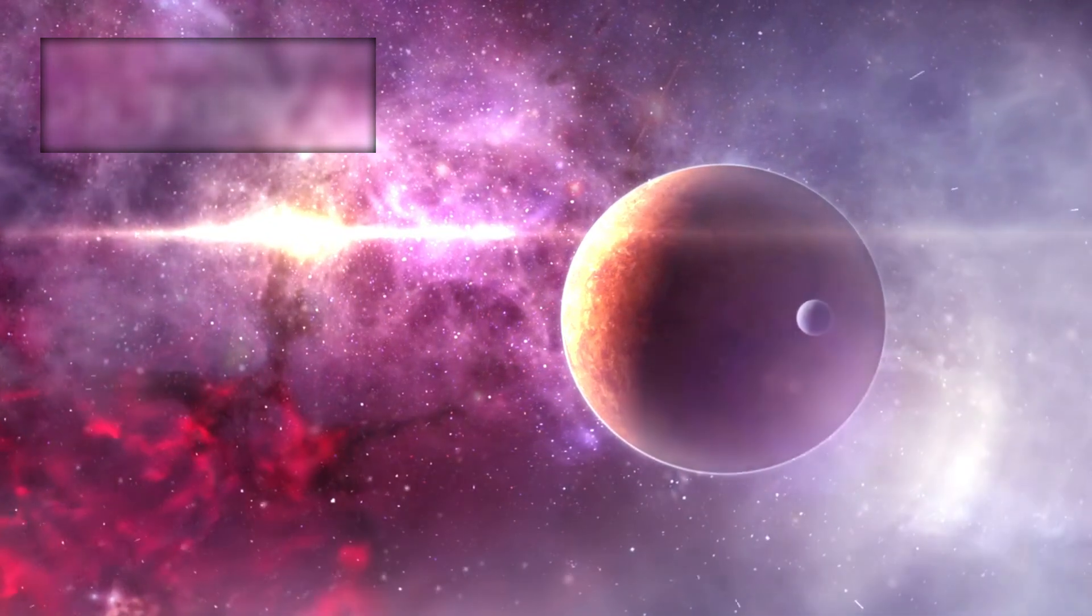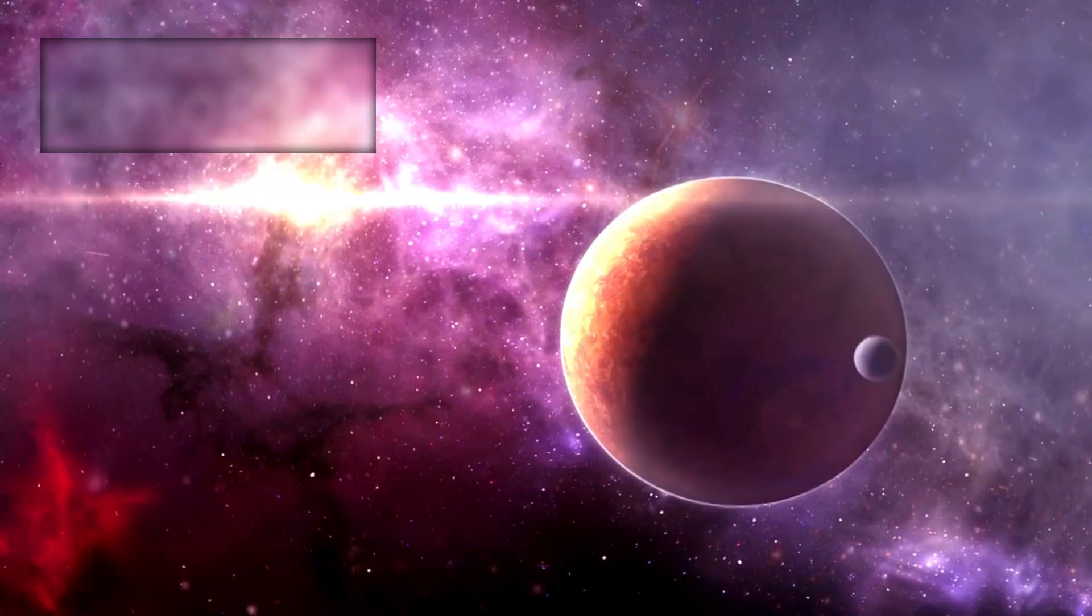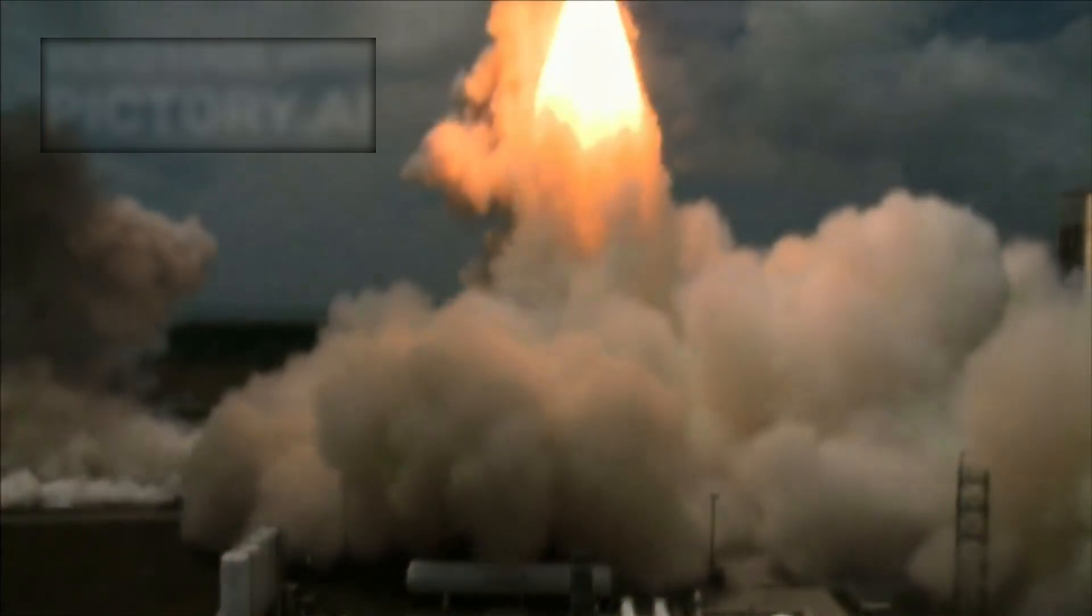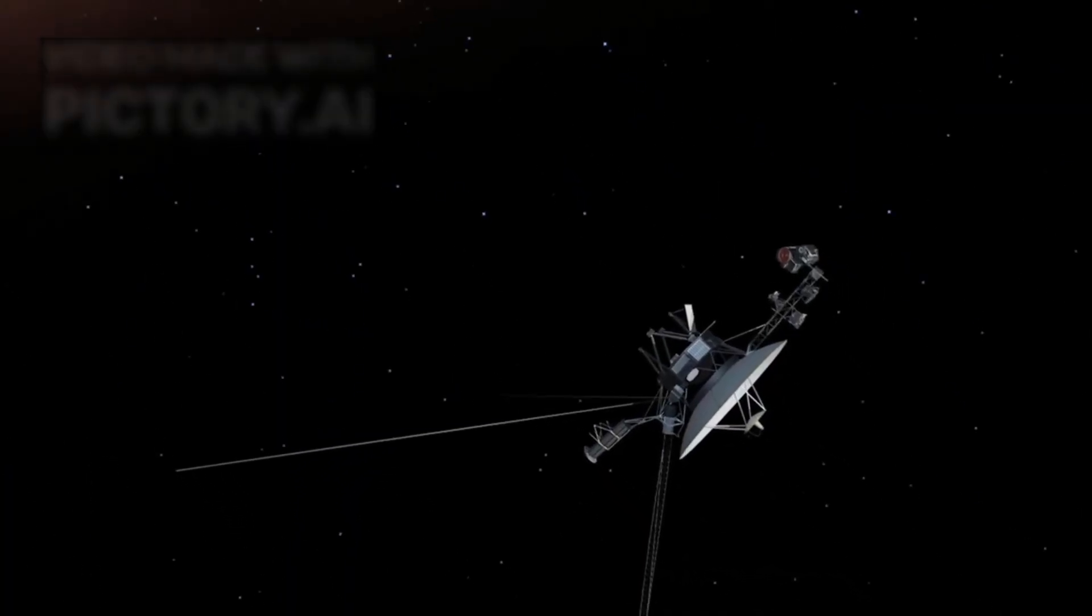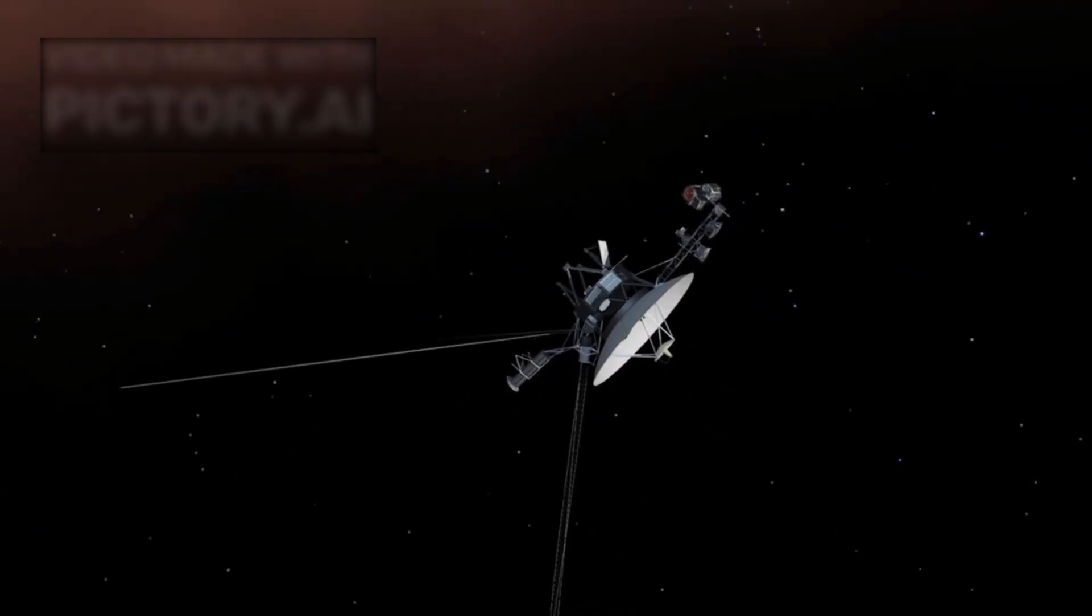For nearly five decades, Voyager 2 has been silently gliding through the vast emptiness of space. Launched in 1977, it was built to last just a few years, tasked with a flyby mission to the outer planets. Yet it has defied all expectations, crossing into interstellar space and continuing to transmit faint whispers back to Earth.